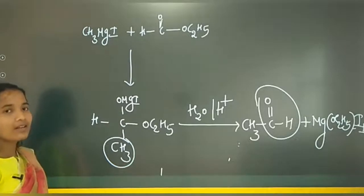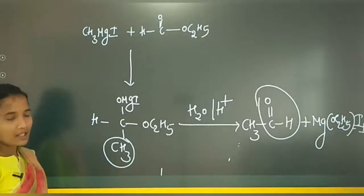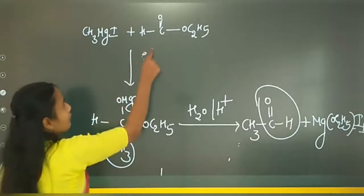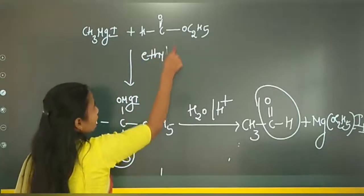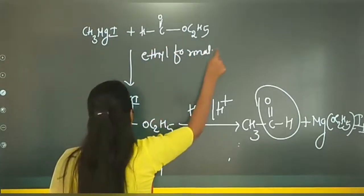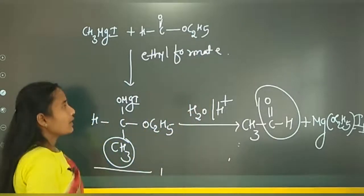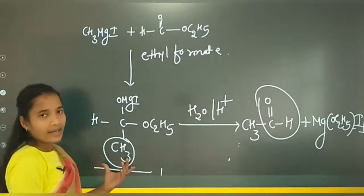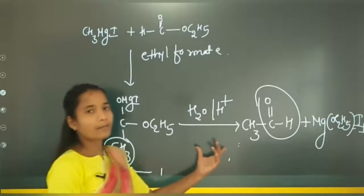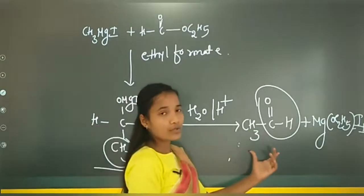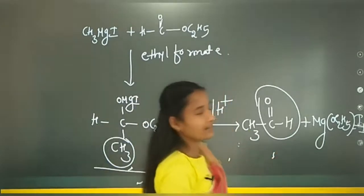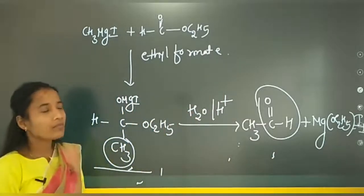To summarize today's concept: first, we take methyl magnesium iodide; it reacts with ethyl formate to give an addition compound; then after hydrolysis, it gives methyl aldehyde and an additional by-product.